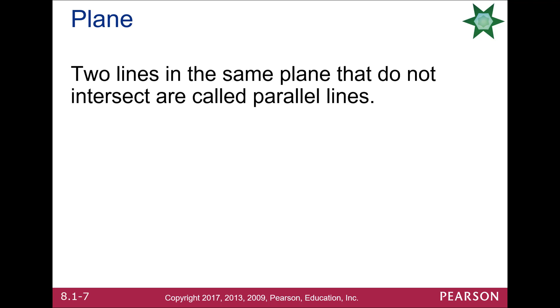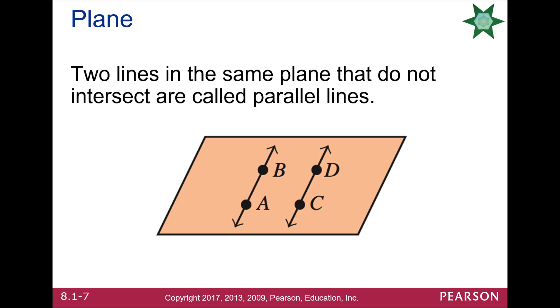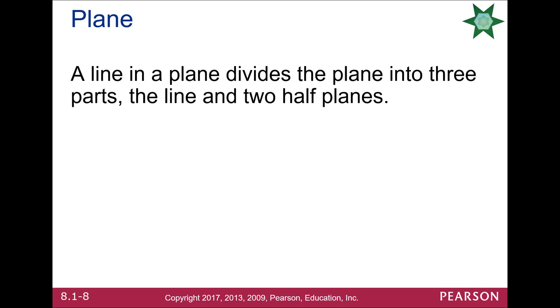If you have two lines in the same plane and they do not intersect, they're called parallel lines. A, B, and C, D are parallel lines. They are always the same distance apart. They do not intersect.